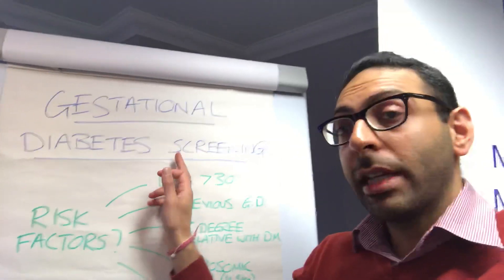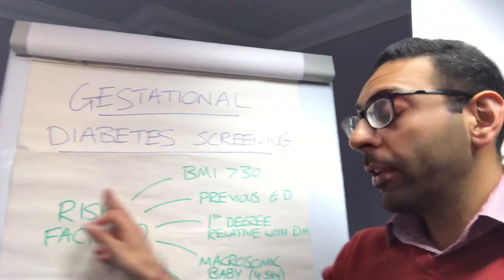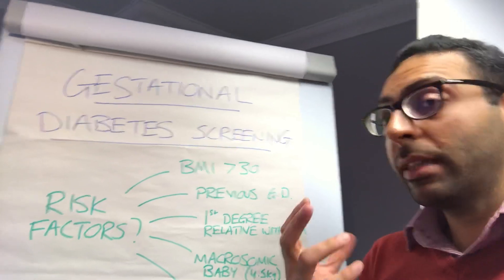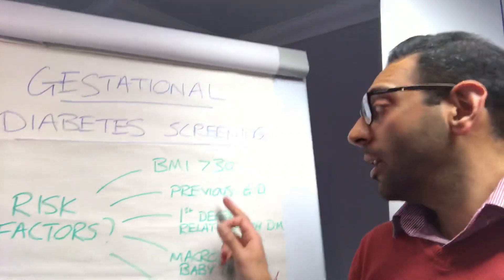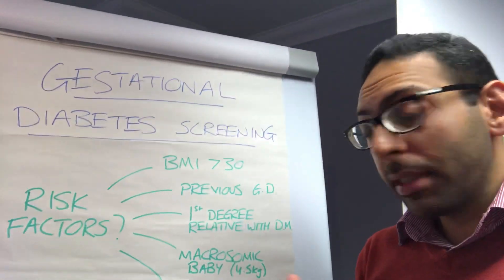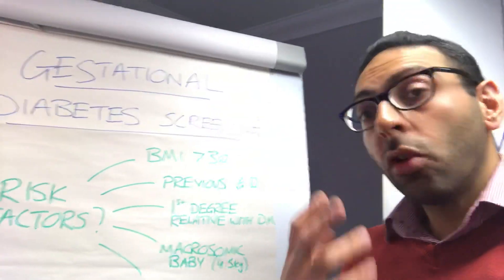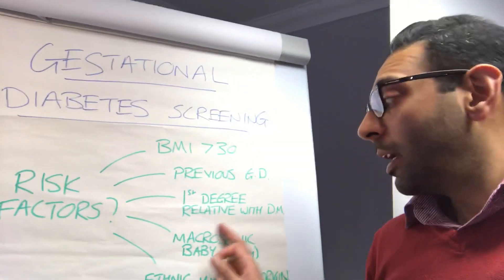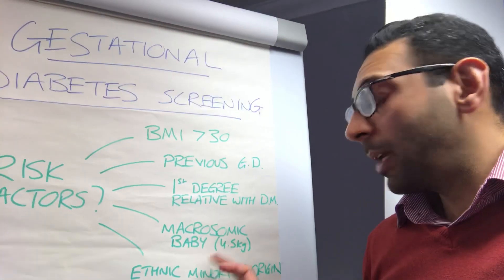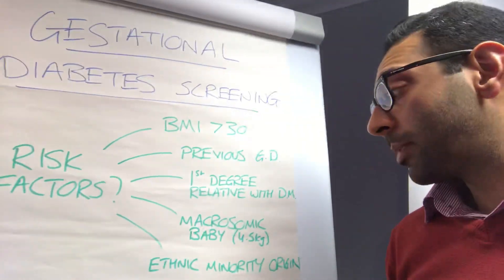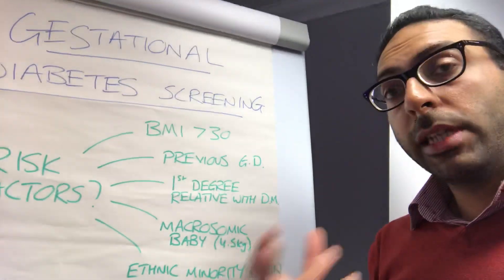So when do you think about screening for gestational diabetes? Firstly, you've got to look at how they've got a risk factor for gestational diabetes. These are things like BMI over 30, previous history of gestational diabetes themselves, a first-degree relative with normal diabetes — not gestational diabetes — a previous macrosomic baby, so a large baby weighing over 4.5 kilograms, and if you come from an ethnic minority origin.